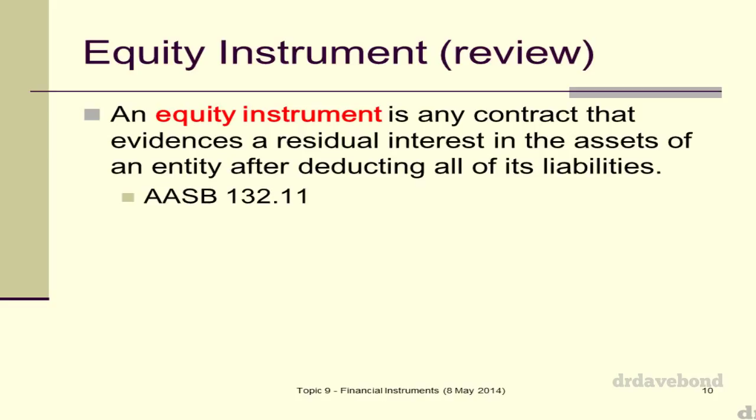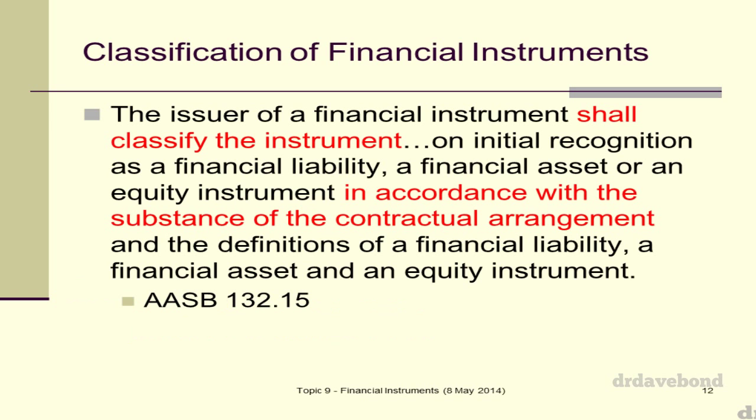When we see a compound instrument, we'll see how that works — which is what we're about to have a look at. The classification of financial instruments: the issuer of a financial instrument shall classify the instrument on initial recognition, and that is done in accordance with the substance of the contractual arrangement. Just because you issue something and call it equity doesn't necessarily make it so. You've got to look at the substance — does it look like a financial liability? Is there a contractual obligation to pay some sort of financial asset? It's an economic idea, not a legal idea. You look at the substance and the definitions of what a liability, an asset, and an equity instrument are.